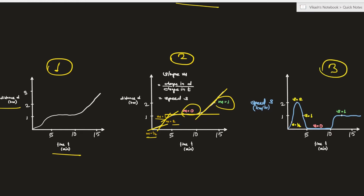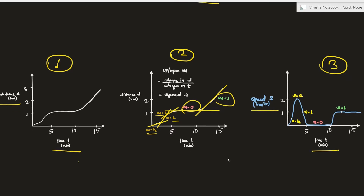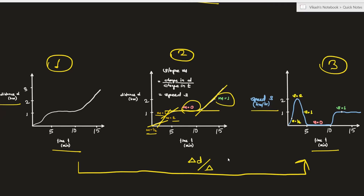On the third figure we plotted all these values of m on a graph of speed over time. This entire process is actually called the differentiation of distance with respect to time, or d/dt, because on the first figure we had distance and time, and we wanted to study how with a small change in time, how much change there is in distance.